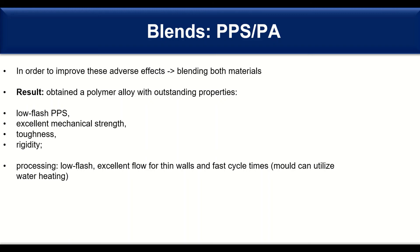To improve these adverse effects, by blending both materials you receive a polymer alloy with outstanding properties: excellent mechanical strength, toughness, and rigidity, as well as low flash — a PPS processing advantage. In terms of processing, you also get excellent flow for thin walls and fast cycle times. For this alloy you can use a mold with water heating instead of oil heating, whereas for pure PPS you need a minimum of 135 degrees C in the mold during processing. With such a blend you can fulfill certain product requirements which are needed.